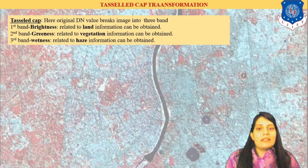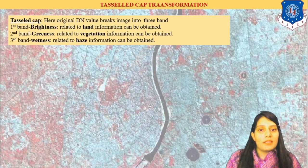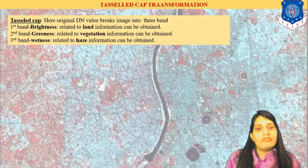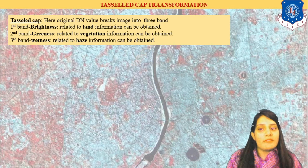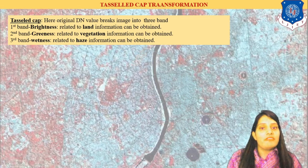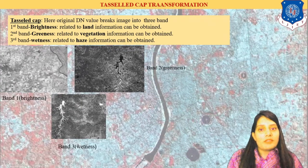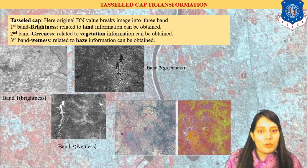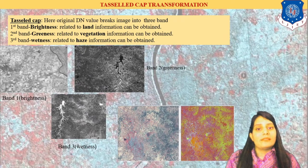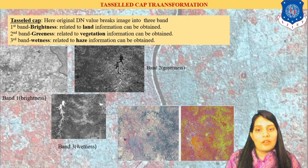Tasseled cap transformation is used for vegetation indices calculation. If I want to know the vegetation indices in an image, tasseled cap transformation is used. The first component shows brightness, the second shows greenness, and the third shows wetness. You can see images 1, 2, and 3 showing how they are classified, and the final output shows what colors indicate. So if I want wetness, greenness, and brightness, I can use this transformation.